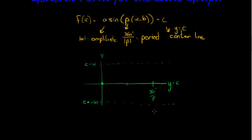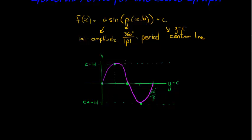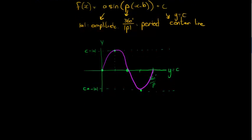Halfway through the period I'll be halfway through the cycle. At a quarter of the way I reach my maximum, halfway I'm back at the center line, three quarters of the way I reach my minimum, and then I'm back again. There is my sketch completely done with only the theory — I didn't even use any values and yet I can draw this graph.